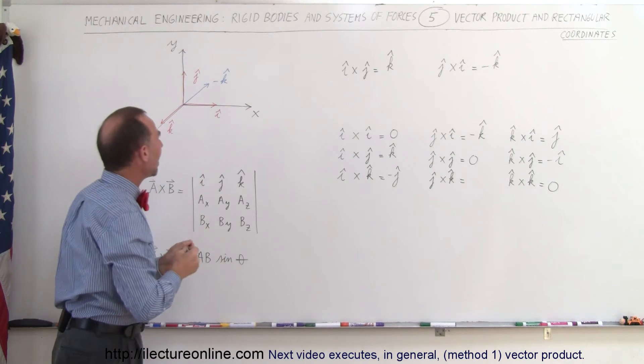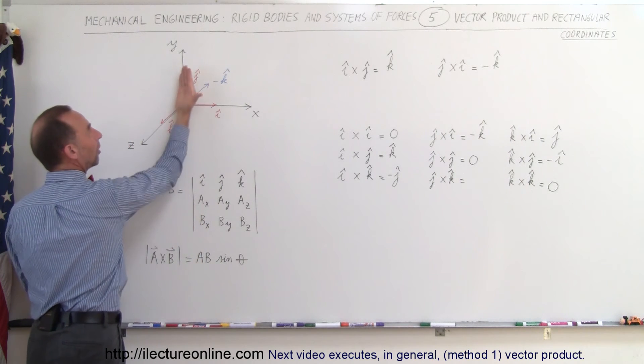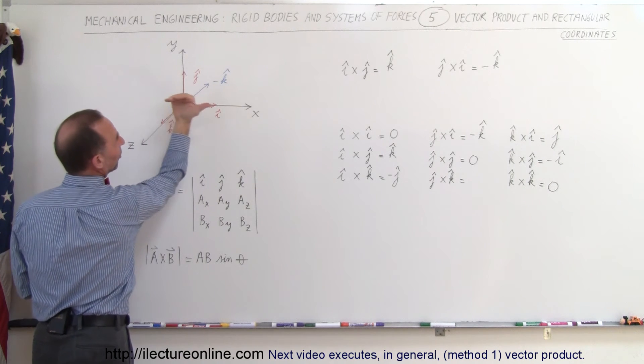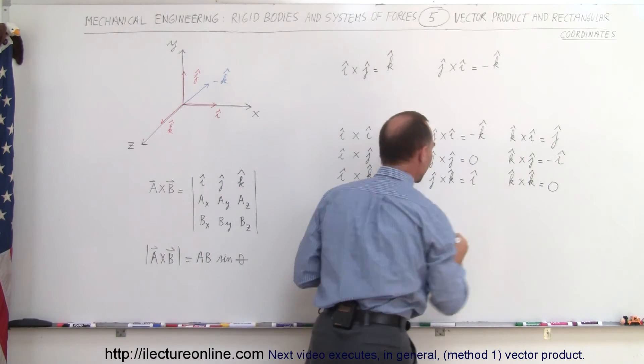J cross K, so we have J cross K. We go up on the Y axis, out of the board on the Z axis, my thumb points to the positive X direction, which is a positive I.